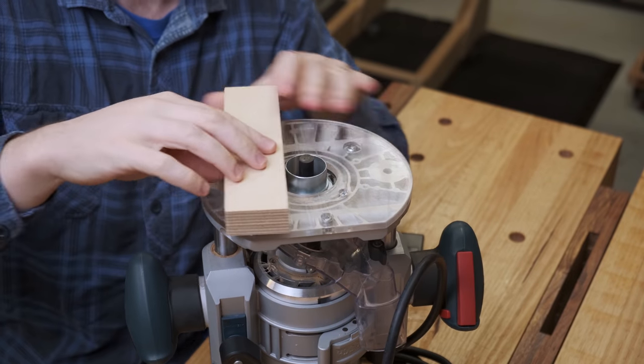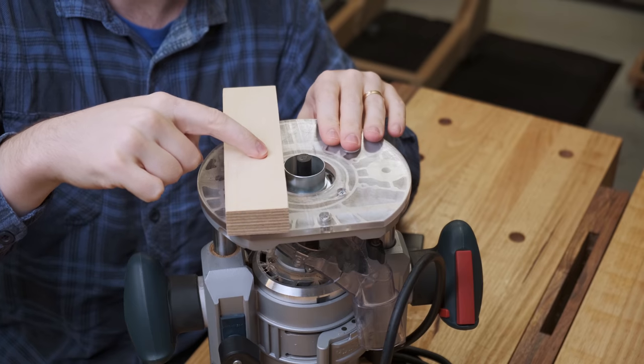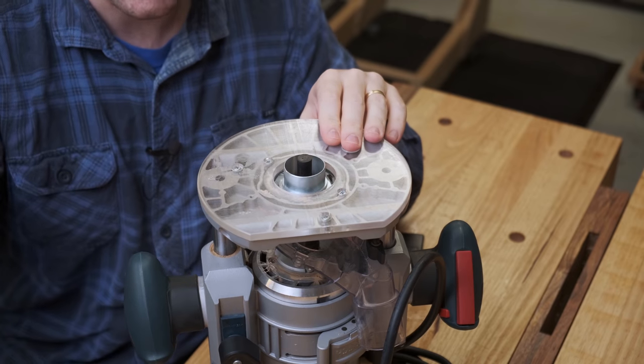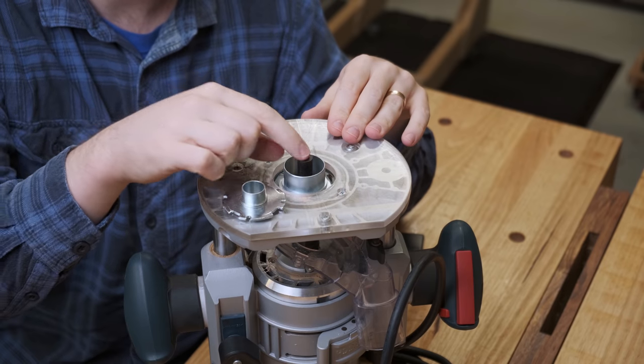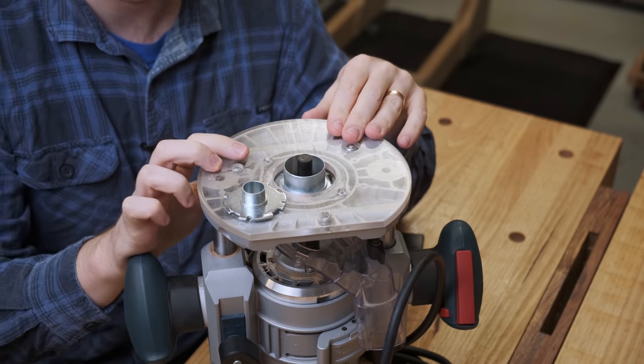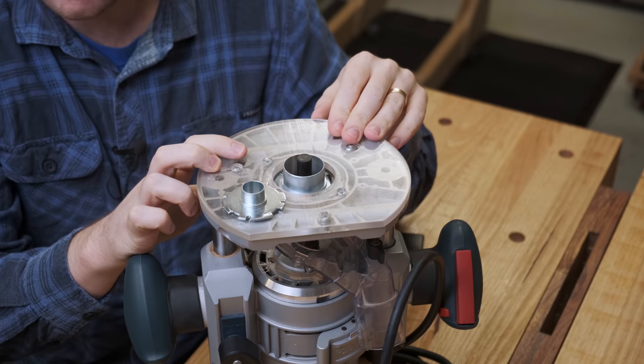So when you plunge down, the bit never comes in contact with the template, it only cuts the work piece. Different diameter guide bushings mean that you have different diameter offsets from the bit to the template. So those are things you need to keep in mind when designing your templates.